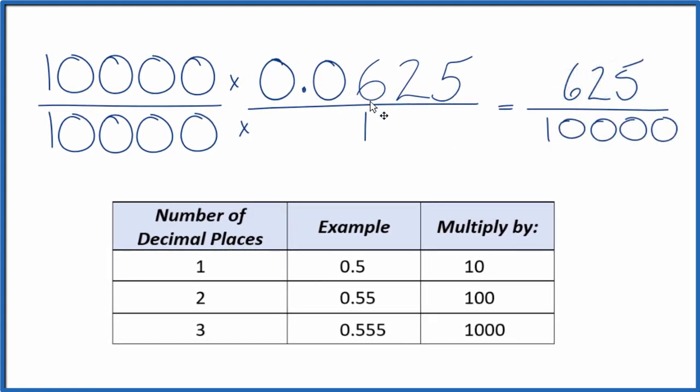So it ends up that the decimal 0.0625 equals 625 over 10,000. But we can simplify this. So let's do that.